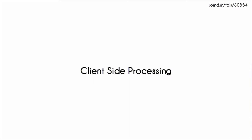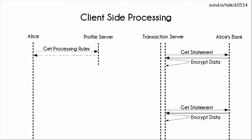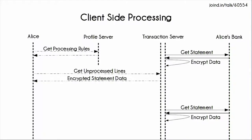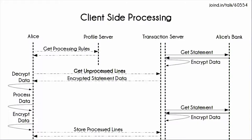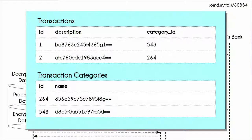At the moment I'm settling for client-side processing, which means that you have to be logged in at the time for anything to happen, but there are ways around that. Essentially what's going to happen is Alice will get processing rules from the profile server, then go to the transaction server and say: give me any transactions that haven't been processed yet. Alice's browser will then decrypt that information, process it, re-encrypt it, and send it back to the transaction server marked as processed. We might get transaction information where the description is completely encrypted and it's got a category ID which maps to a category name - whereas if it was processed on the server we wouldn't be able to get that level of information.